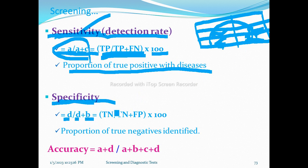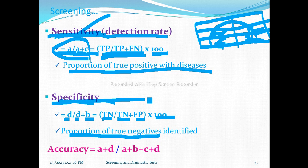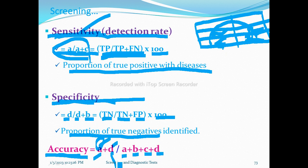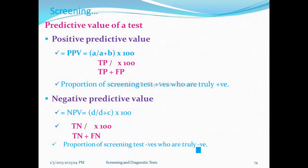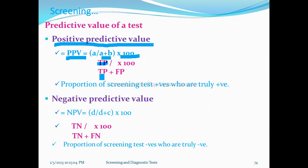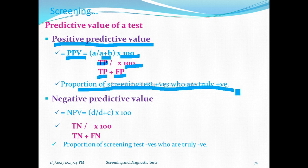Specificity is D over D plus B — true negative over true negative plus false positive. Positive predictive value is equal to A over A plus B — true positive over true positive plus false positive. This is the proportion of screen test positives who are truly positive.